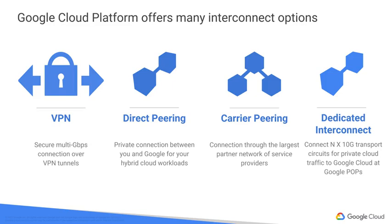Customers who want the highest uptimes for their interconnection with Google should use dedicated interconnect, in which customers get one or more direct private connections to Google. If these connections have topologies that meet Google's specifications, they can be covered by up to a 99.99% SLA. These connections can also be backed up by a VPN for even greater reliability.